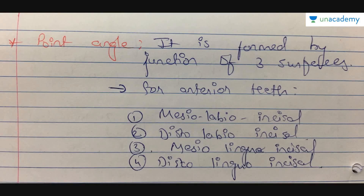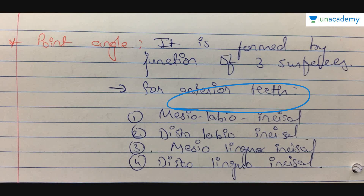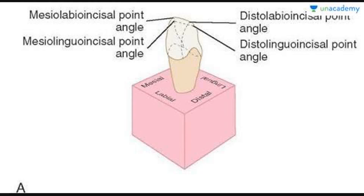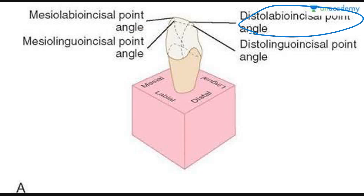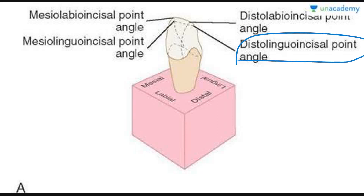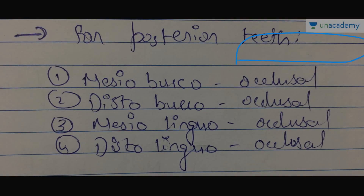Then comes the point angle — it is formed by the junction of three surfaces. For anterior teeth, you can see in the diagram: the mesiolabioincisal point angle is the junction of the mesial, labial, and incisal surfaces. The same goes with the distolabioincisal point angle. Then comes your mesiolinguoincisal and distolinguoincisal point angles. These are the point angles for anterior teeth.